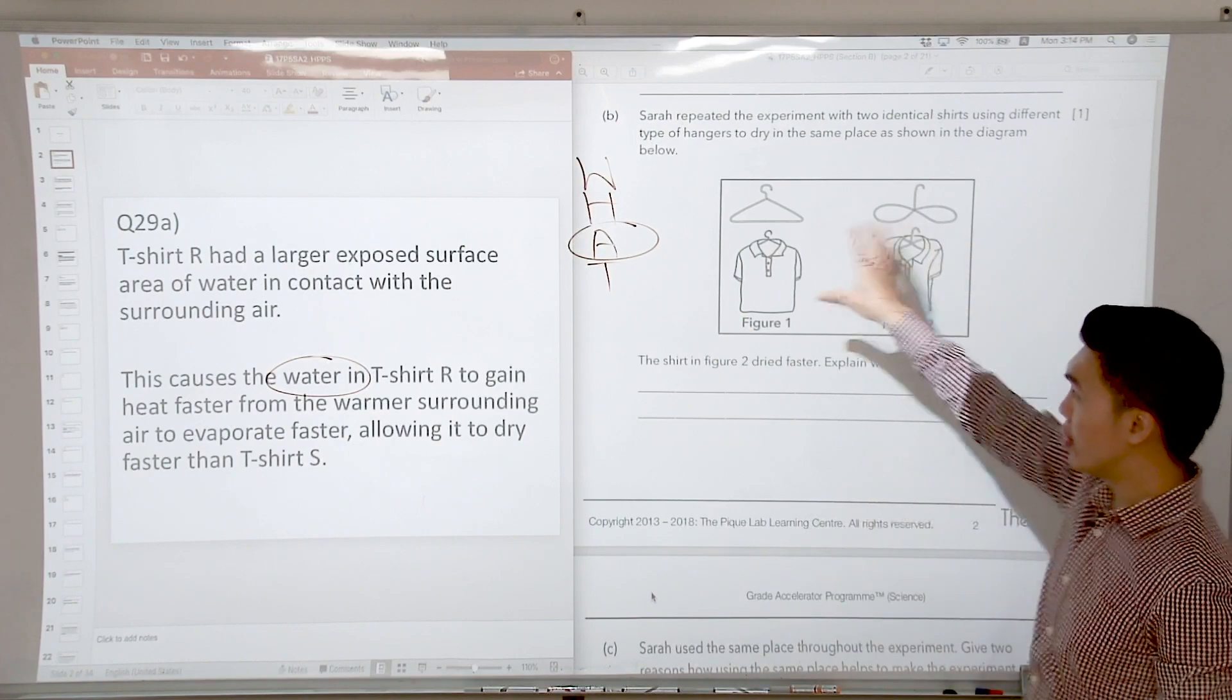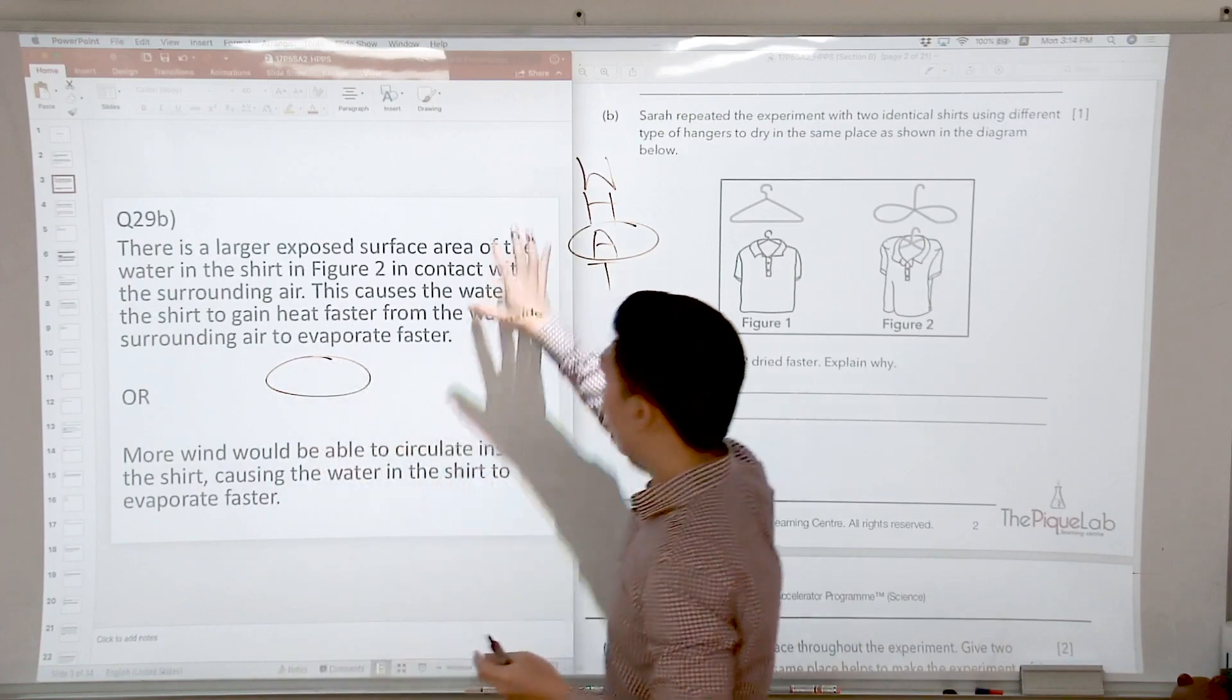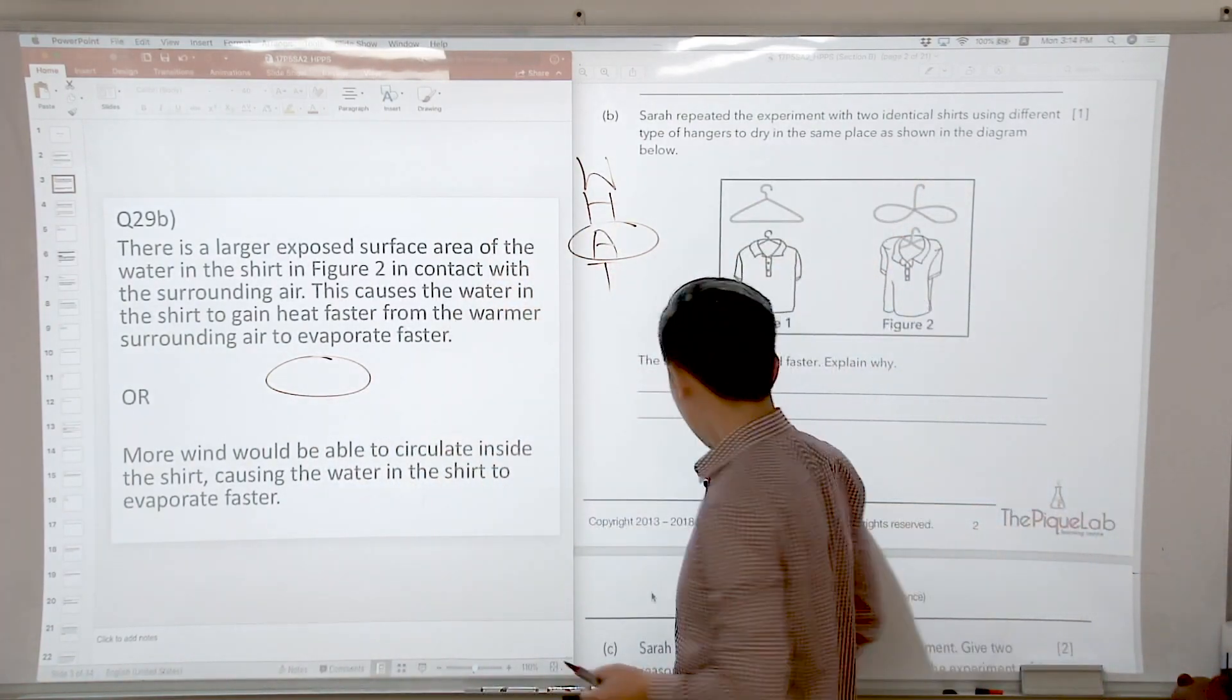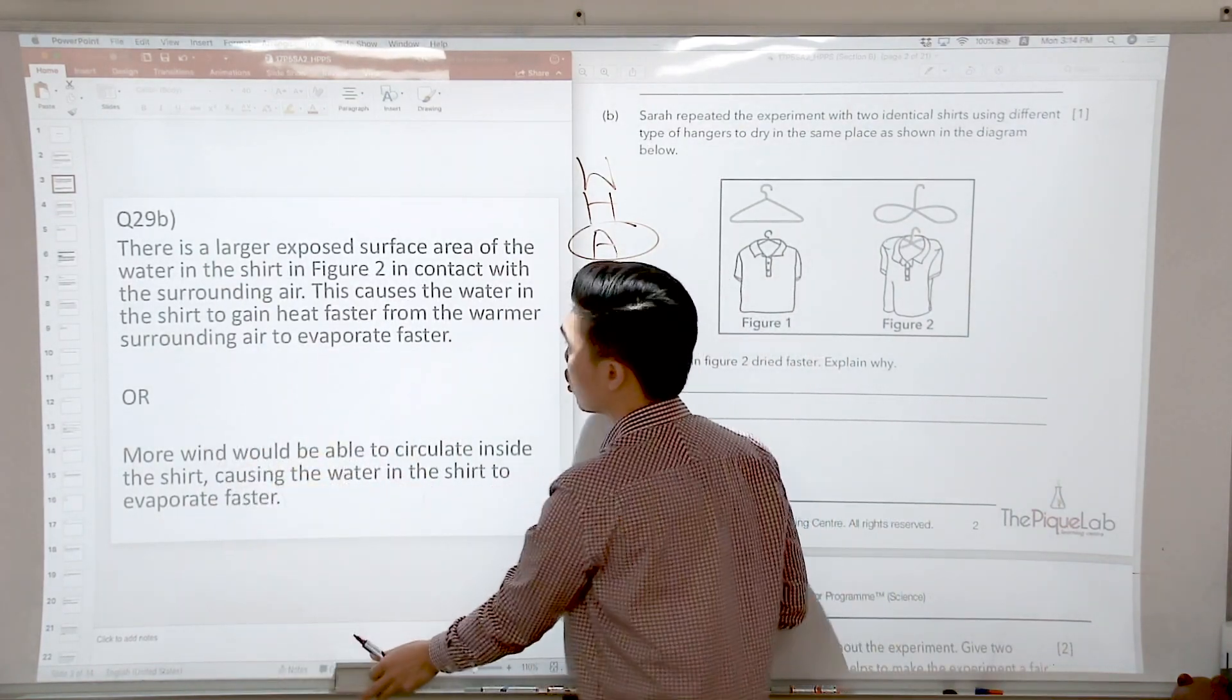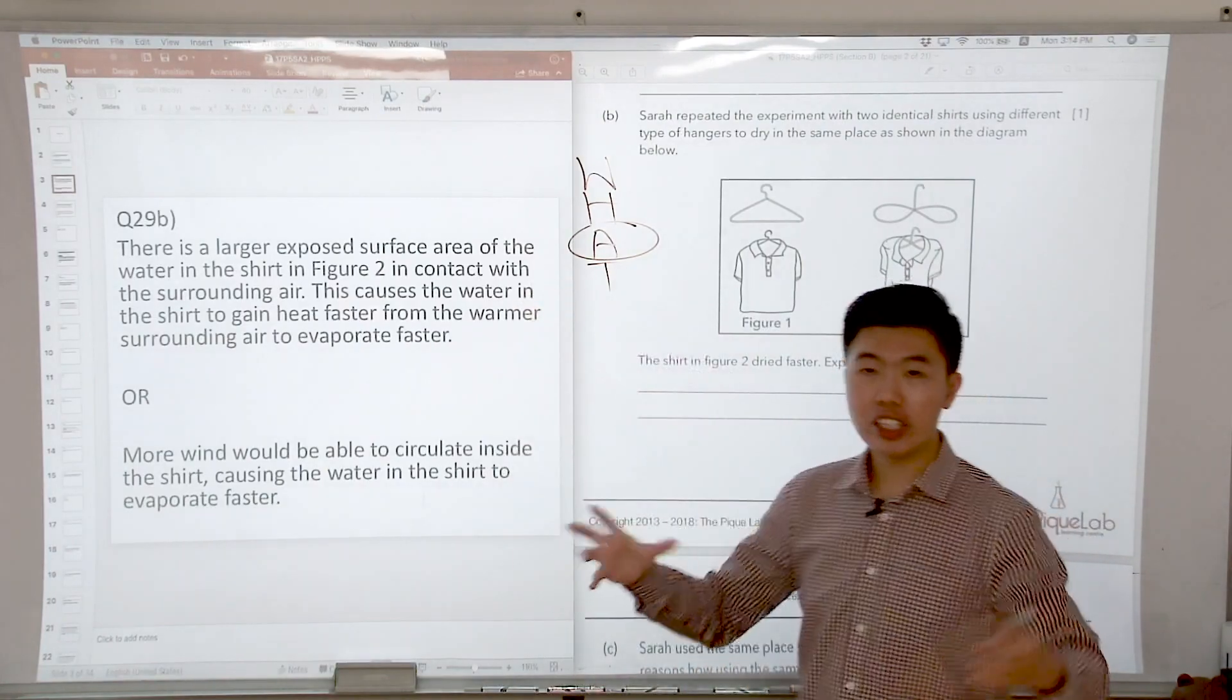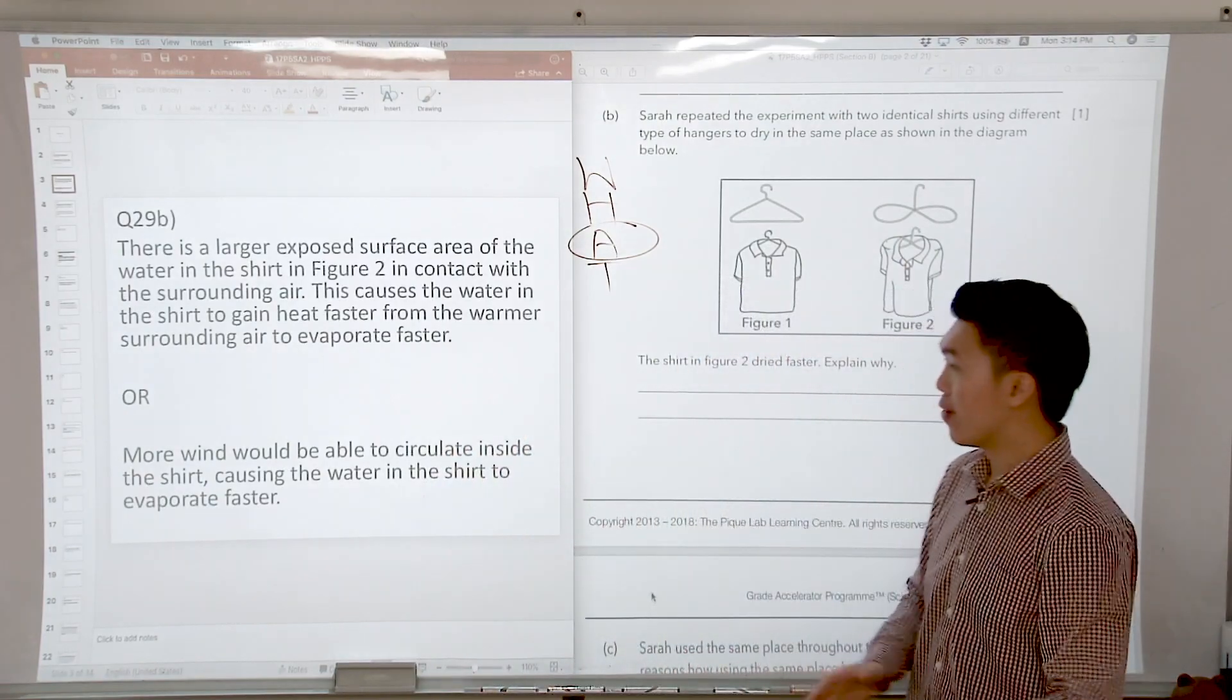What concept do you think it's testing again? Actually, it's the same concept. It is the concept of exposed surface area. So how should we answer that? Because of the hanger in figure 2, there is a larger exposed surface area of the water in the T-shirt in figure 2 that is in contact with the surrounding air. So the water in the T-shirt will gain heat faster and then evaporate faster.